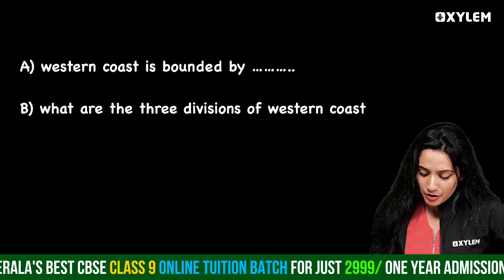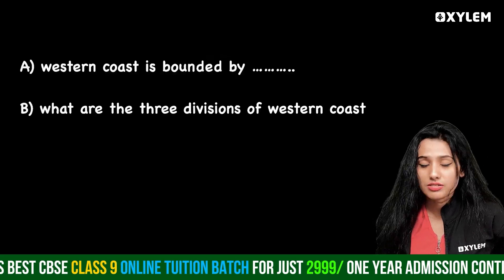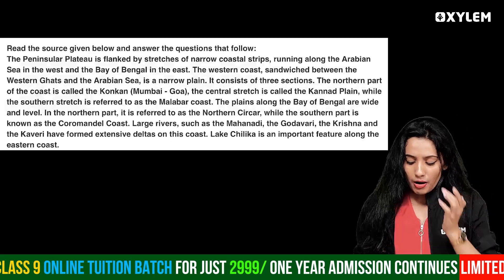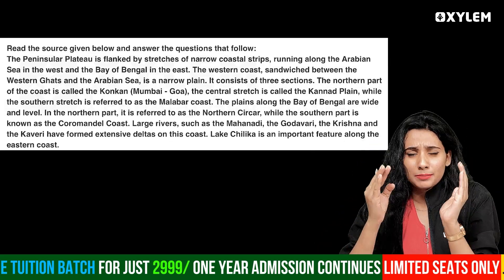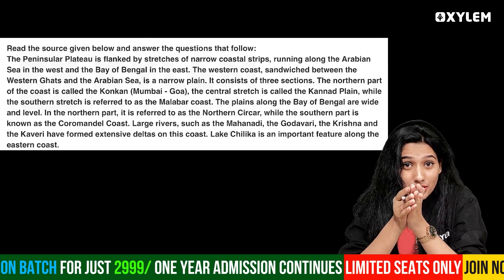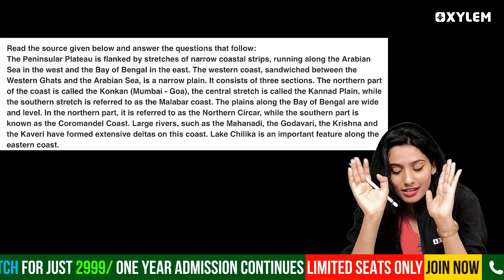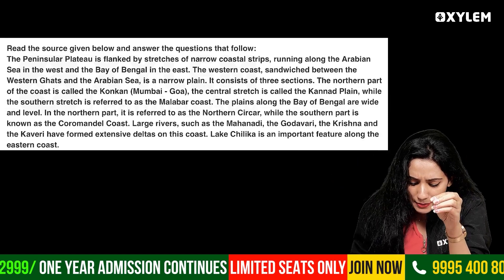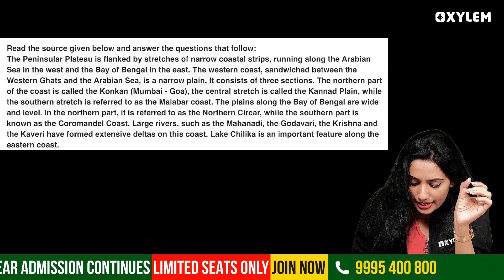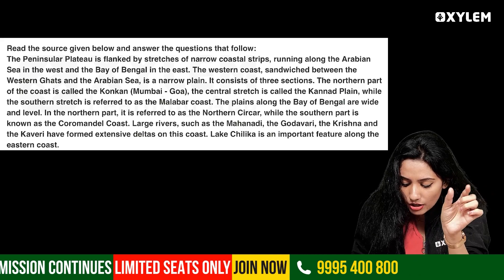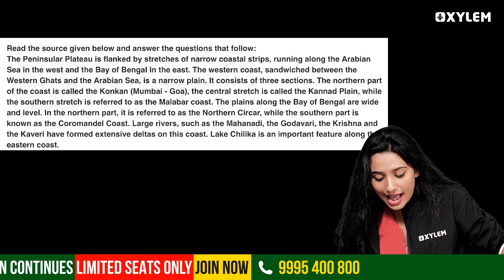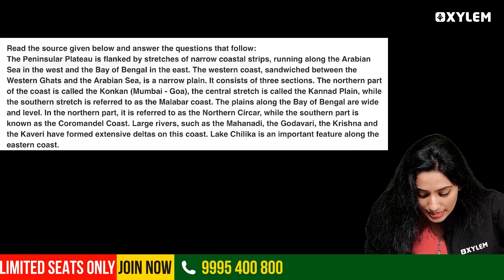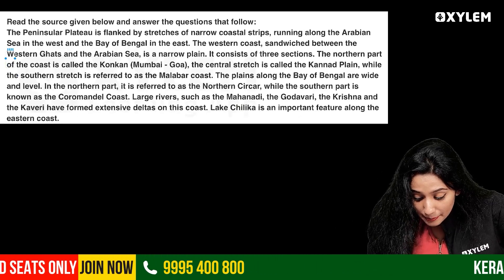The first question is: the Western Coast is bounded by what? The answer is: the Western Coast is sandwiched between the Western Ghats and the Arabian Sea.